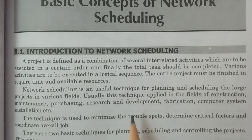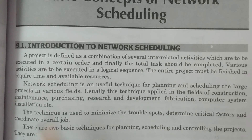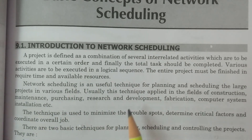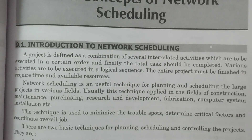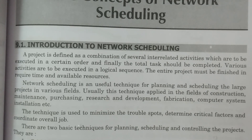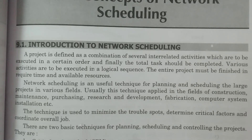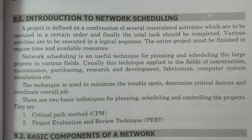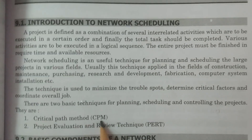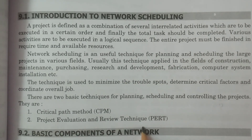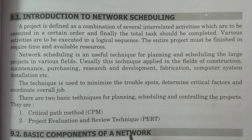The minimum duration to complete the project is also determined. This is network scheduling. It is applied in fields such as construction, maintenance, purchasing, research and development, fabrication, and computer system installations. There are two main techniques: the Critical Path Method (CPM) and the Project Evaluation and Review Technique (PERT).